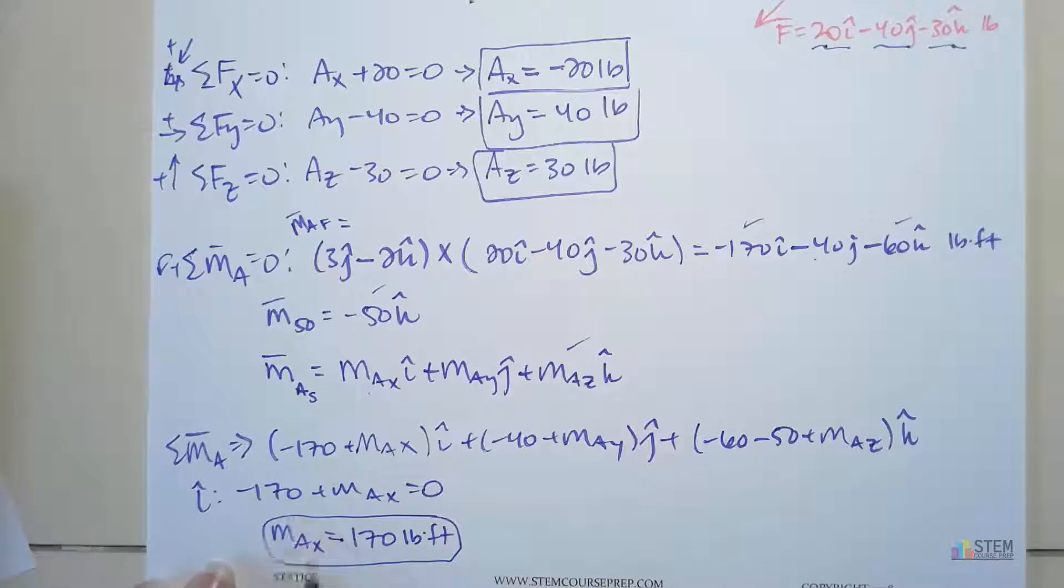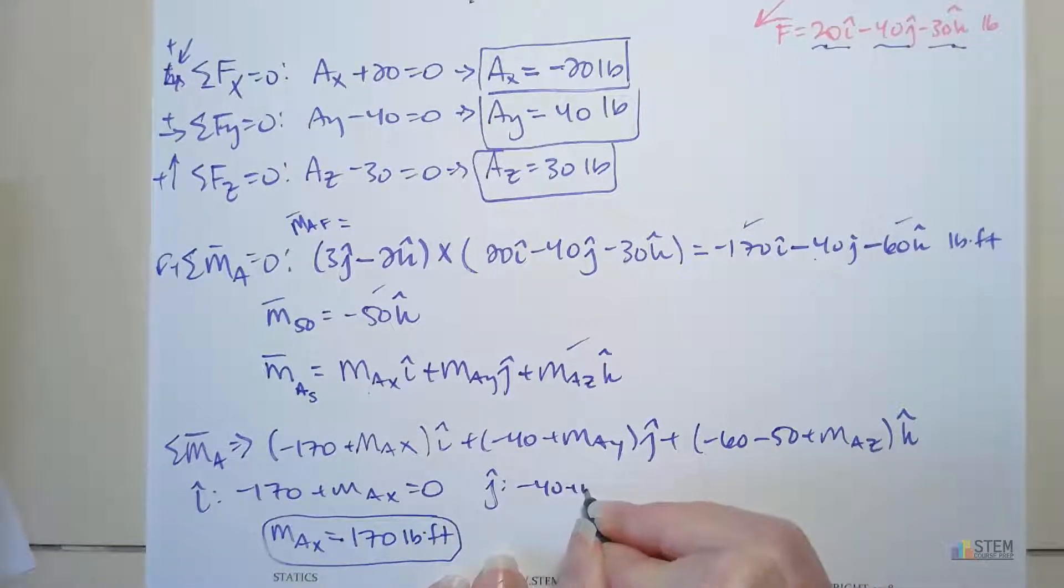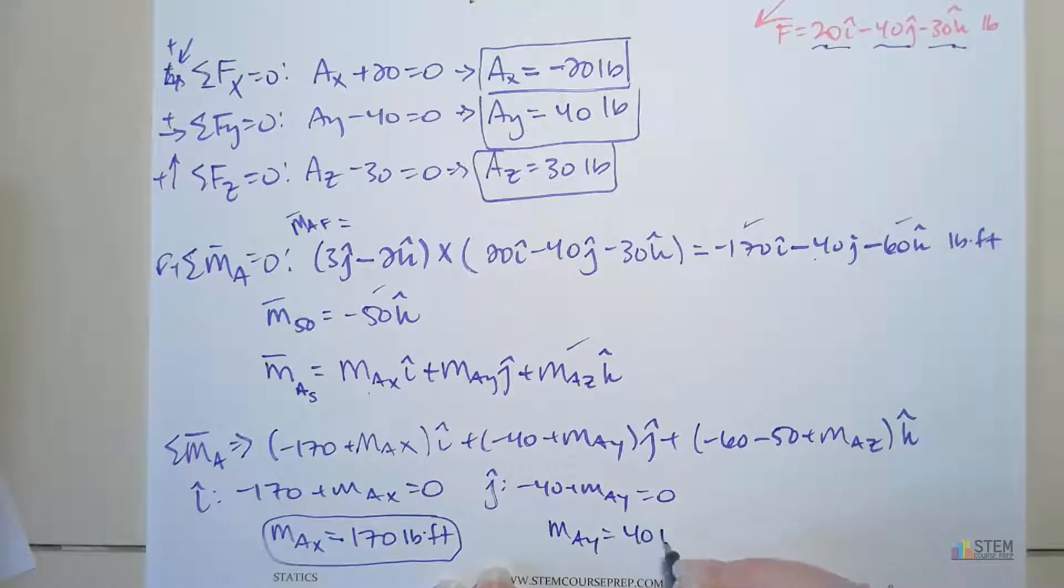So the couple moment produced by the fixed support is counteracting these other moments about the X-axis to prevent any rotation. That's what we get here. And we got a positive, so that means us assuming counterclockwise up here was correct. All right, so J. Let's go to the J component. We got negative 40 plus M-A-Y. Let's set that equal to zero. Here you can solve for M-A-Y. You get 40 foot-pounds. So our fixed support is going to provide a couple moment of 40 foot-pounds. That's going to counteract the other moments about the Y-axis due to the force that was applied.